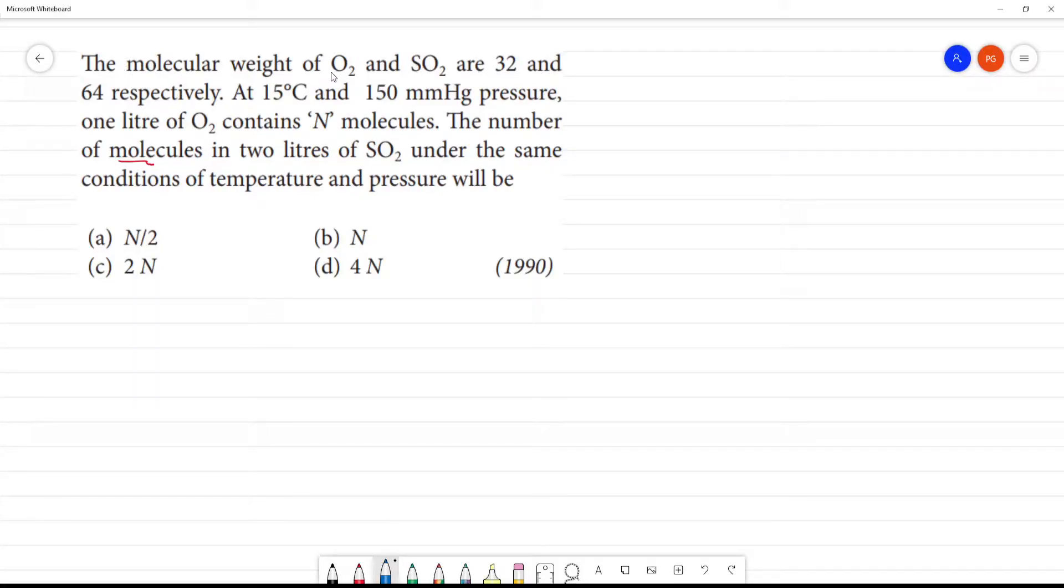The molecular weight of oxygen and SO2 are 32 and 64 respectively. So oxygen molecular weight is 32, SO2 sulfur dioxide molecular weight is 64. At 15 degrees Celsius and 150 mmHg pressure, under the same conditions of temperature and pressure...